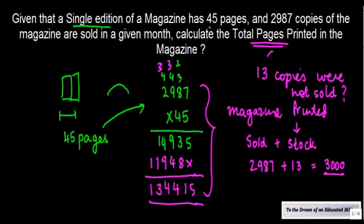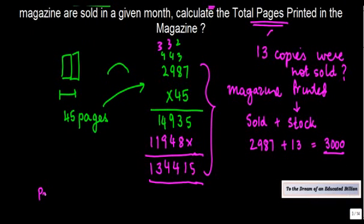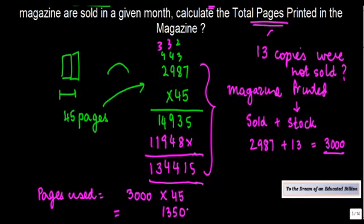One magazine has 45 pages. So what is the total number of pages used? 3,000 into 45. And this can be calculated very quickly. This is the answer.